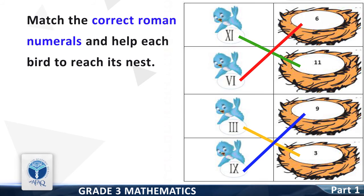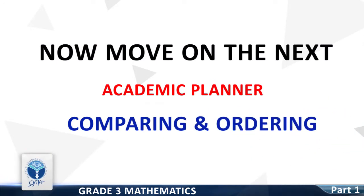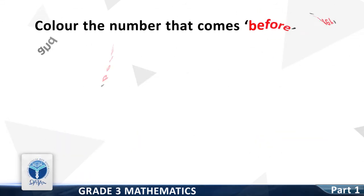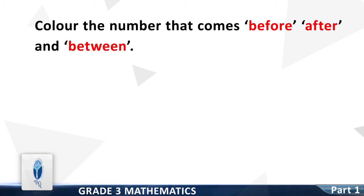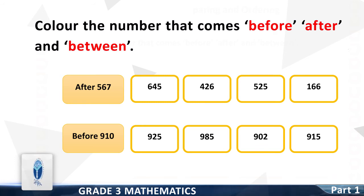You have done a great job. Now we move to the next academic planner: comparing and ordering. The resource pack concept is: color the number that comes before, after, and between. Let's start from the number after 567. Good, it is 645. Color the box.